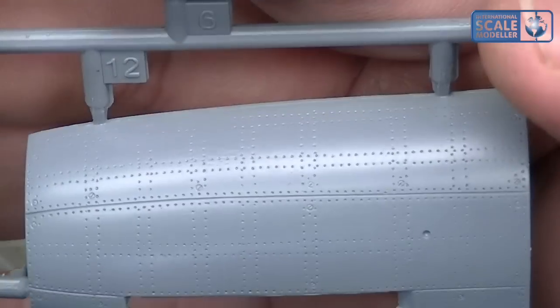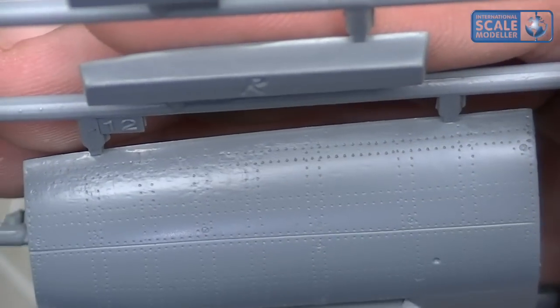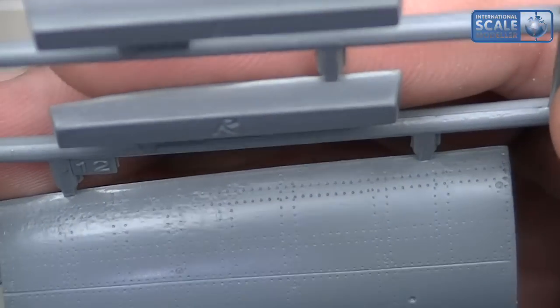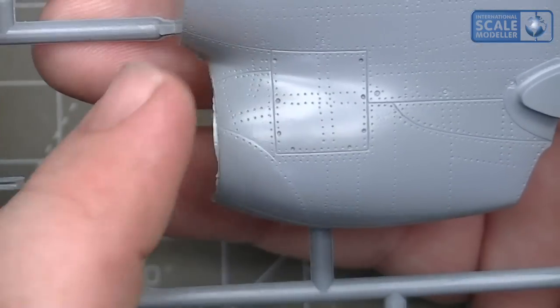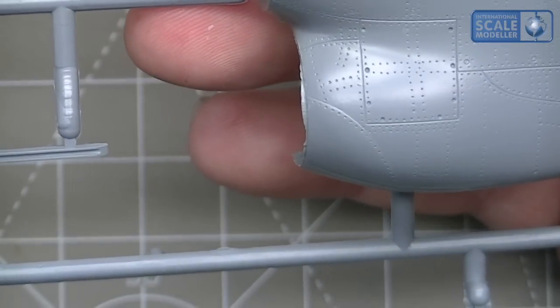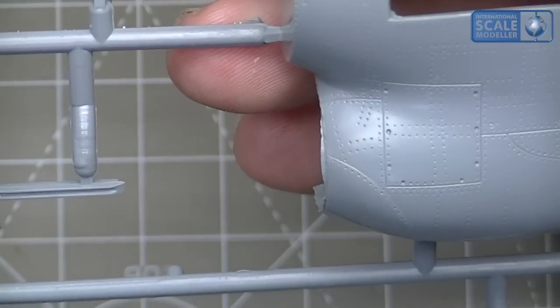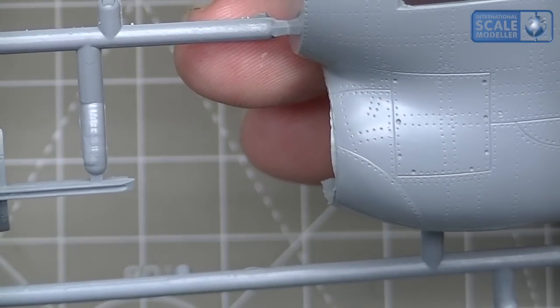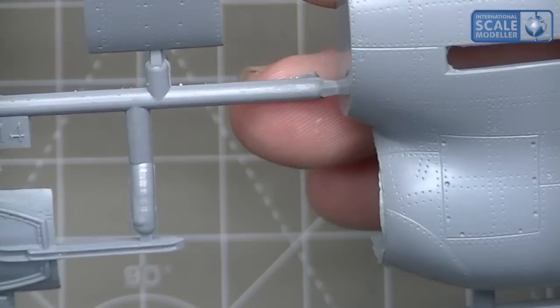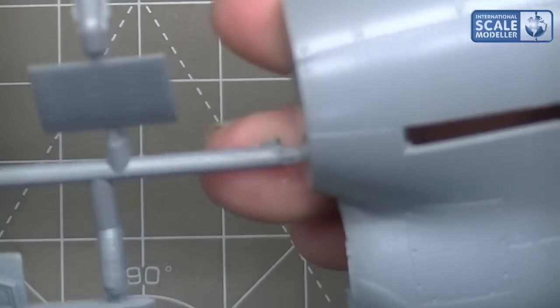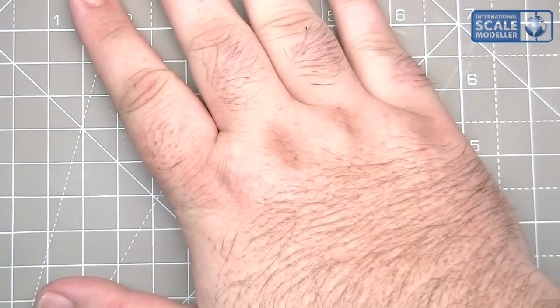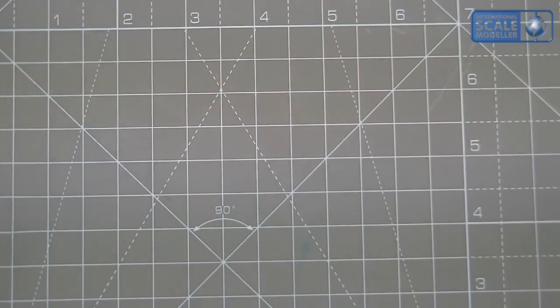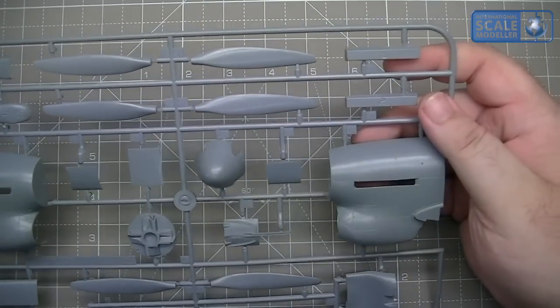Obviously you're going to lose some of it putting the fuselage halves together, so you're going to need to re-rivet it. That's a big part of this kit. As you can see, we do have flash - it's a short run kit, so we are going to get flash. There are going to be some flaws here and there.